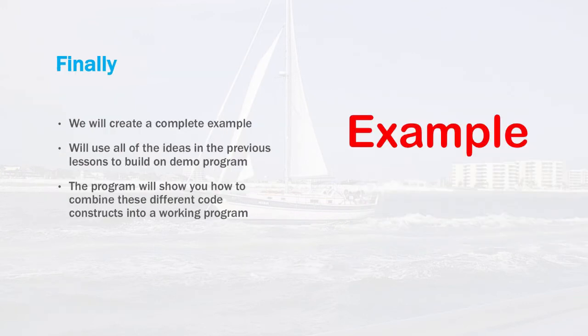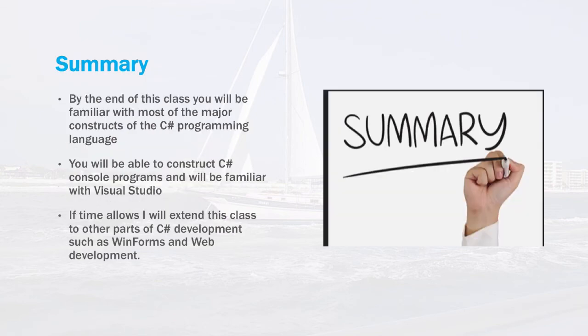In the first part of the class, we'll add step-by-step code fragments to a larger example program that will demonstrate each of the constructs of the language. In the last chapter, we'll take all of that and put it all together and build a demonstration program, using all the different elements we've taught in the class to date, to have a more comprehensive example so you can see a complete working C-Sharp program. By the end of this class, you'll be familiar with most of the major constructs of the C-Sharp programming language, be able to construct C-Sharp console programs, and be familiar with Visual Studio. You'll also be familiar with the edit-compile-build cycle necessary to build software.